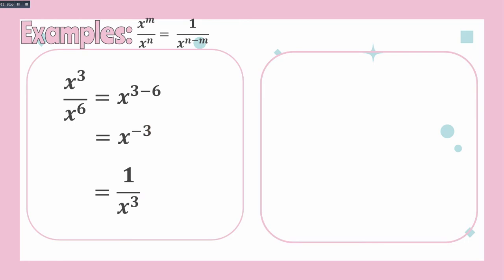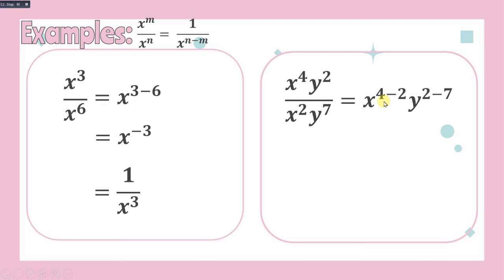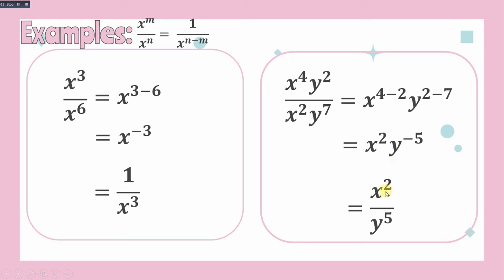For the next example, we have x raised to 4 times y squared over x squared times y raised to 7. Applying the quotient rule, we subtract the exponents of the same base: x raised to 4 minus 2, and y raised to 2 minus 7. This becomes x squared and y raised to negative 5. To eliminate the negative 5, we get the reciprocal of the base y. So the final answer is x squared over y raised to 5.